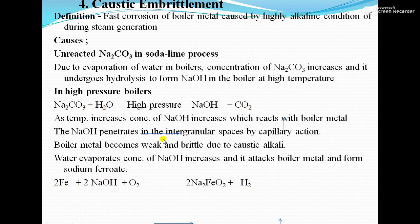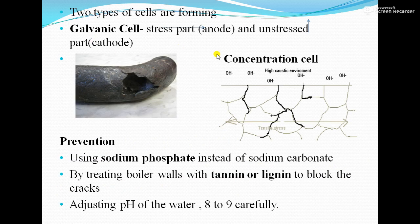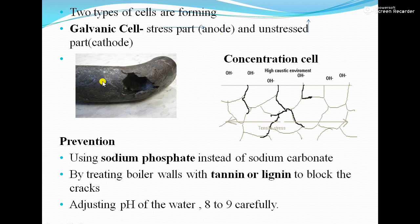There is formation of two types of cells. The first is a galvanic cell: if the boiler metal is bent, a galvanic cell forms between the stressed part and the unstressed part. The stressed part acts as the anode and the unstressed part acts as the cathode, with sodium hydroxide acting as the electrolyte. The anode gets corroded and the cathode gets protected.